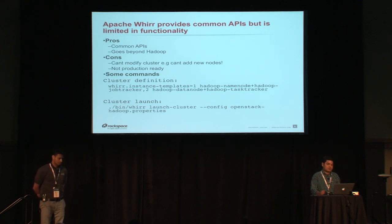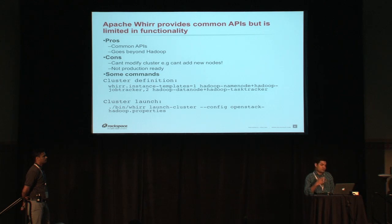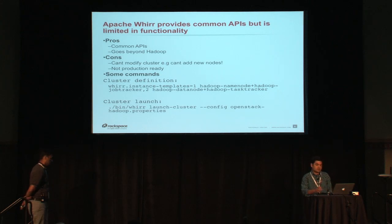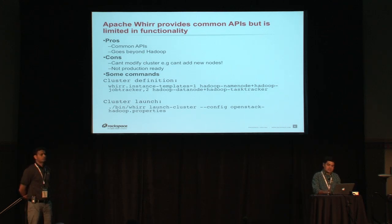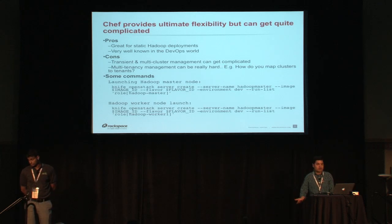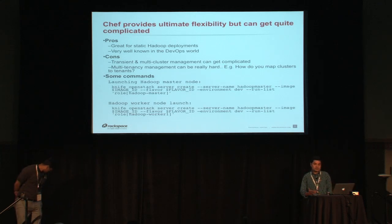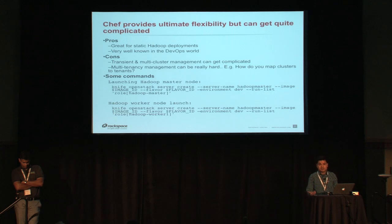With Whirr, you define an instance template where you mention the number of name nodes and data nodes and where you want those installed. You can use that configuration file to launch a cluster. But once you launch the cluster, you really can't do much with it — you cannot modify it, it doesn't provide monitoring and things like that. So it's good for development and testing. The next step would be to write some Chef recipes and do Hadoop deployment yourself. Chef is really good at that, and you can use the same configuration tool for other application deployments in the cloud, including Hadoop. But when talking about managing a cluster, Chef can be pretty difficult to use, though you can make it work.